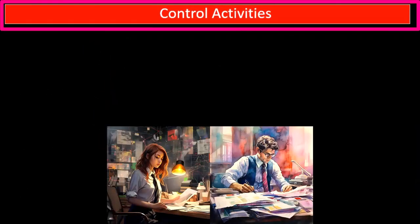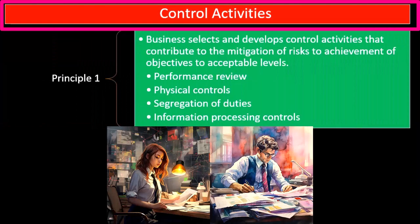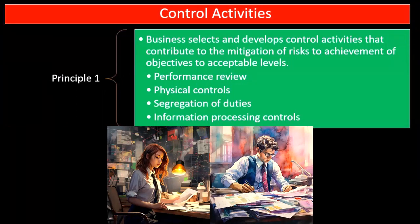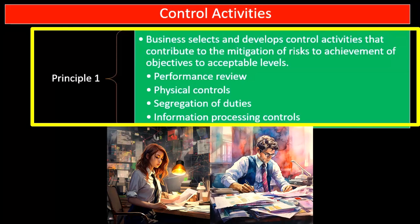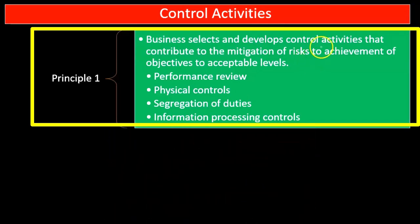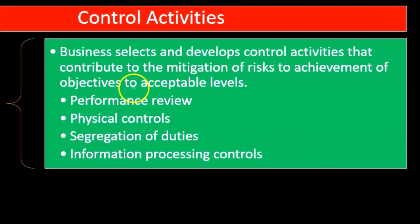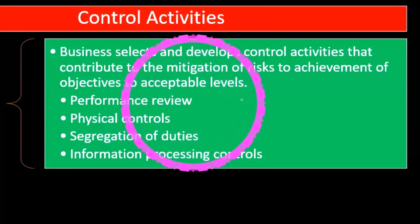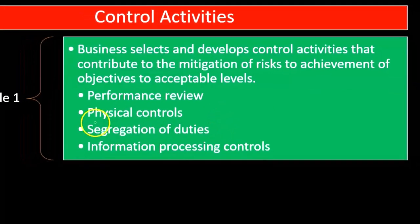Next, we look at the principles related to control activities. Principle number one: the business selects and develops control activities that contribute to the mitigation of risks to the achievement of objectives to acceptable levels. We're talking about the actual development and implementation of those control activities. These include performance reviews, physical controls, and the segregation of duties.